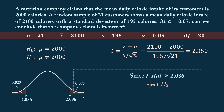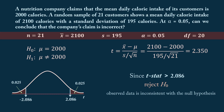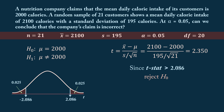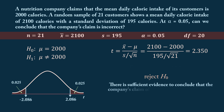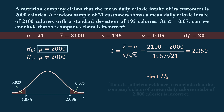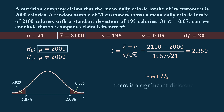Therefore, we reject the null hypothesis at alpha = 0.05. Note that rejecting the null hypothesis doesn't prove that the alternative is true — it only suggests that the observed data is inconsistent with the null hypothesis. At the 5% significance level, we have sufficient evidence to conclude that the company's claim of a mean daily calorie intake of 2,000 calories is incorrect. That is, the difference between the claimed population mean of 2,000 calories and the observed sample mean of 2,100 calories is statistically significant and not due to random chance. Specifically, the data suggests that the true mean daily calorie intake may be higher than the company claims.